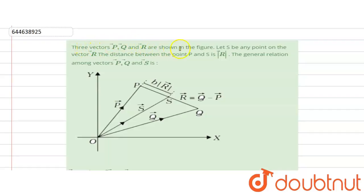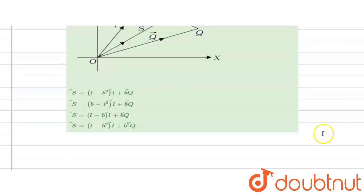The question is: given three vectors p, q, and r shown in the figure, we need to find on vector r the distance between point p and s. We have to find the general relation among vectors p, q, and s. Four options are given.